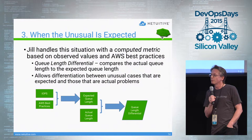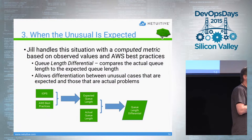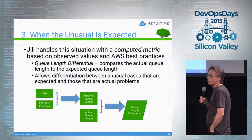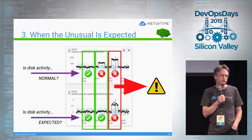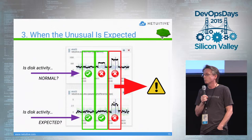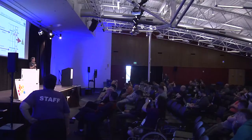Jill handles this situation through use of a computed metric called the queue length differential, which compares the actual queue length with the expected queue length. That allows Jill to know when the queue length is longer than what's actually expected. She can then set up an intelligent policy that differentiates between cases where usage is abnormal but expected, and cases where it's both abnormal and problematic — generating alarms only in that latter case.